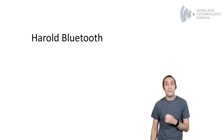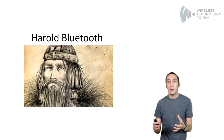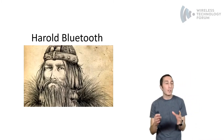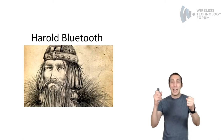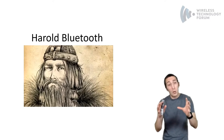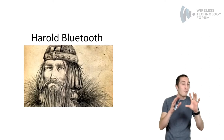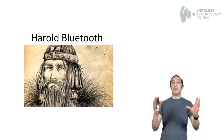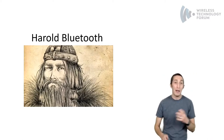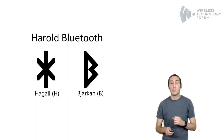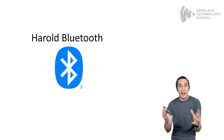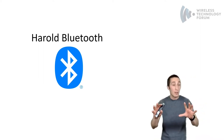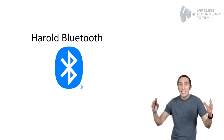Bluetooth was named after a 10th century Scandinavian king known as Harald Gormsson — a Viking king who ruled Denmark and Norway. His greatest accomplishment was uniting Denmark and Norway under his rule. But he was also known for a dead tooth that had gone a very dark grey-blue colour, which earned him the nickname Harald Bluetooth. If you take the initials of his nickname in Nordic runes and combine them, you get basically the Bluetooth logo.